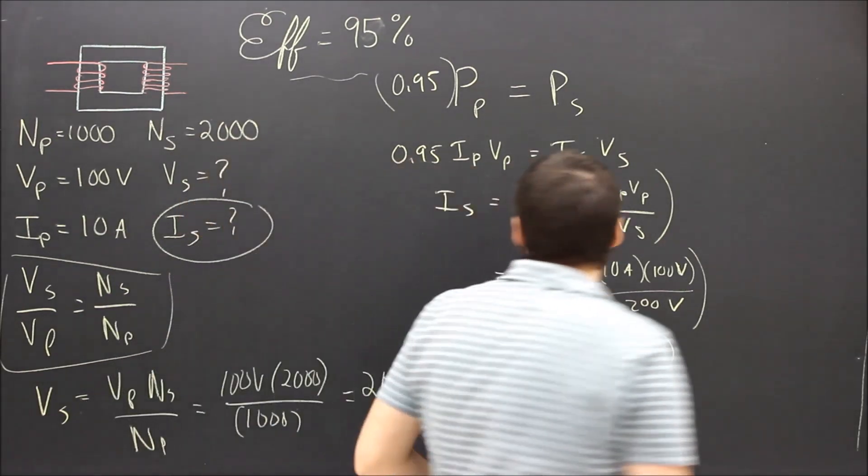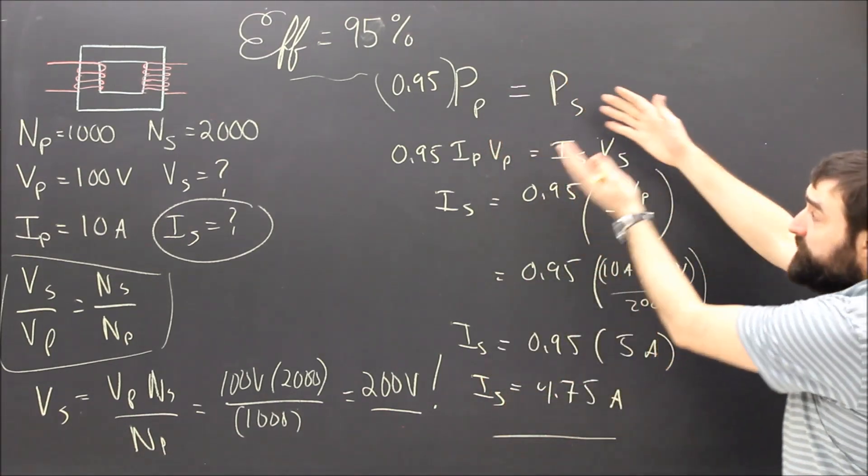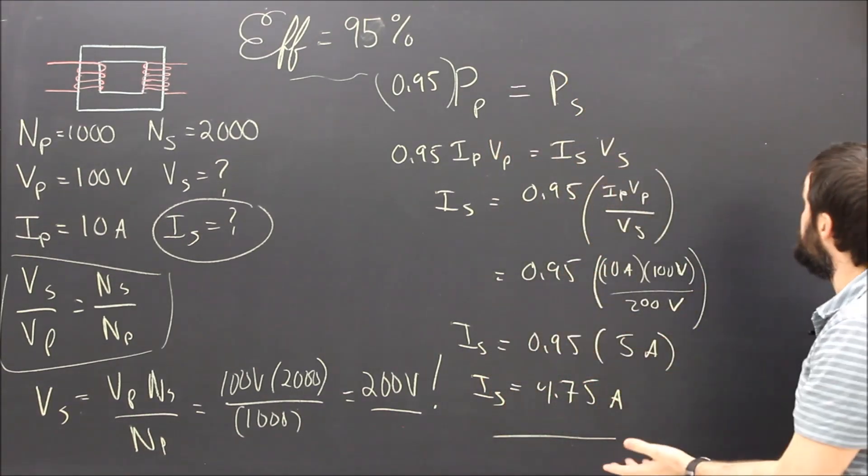So pretty easy, really. In the end, now that we understand it, we could have just said, okay, do it pretending it's 100% efficient and then multiply by the efficiency.